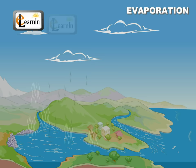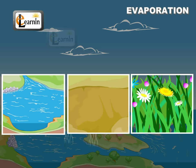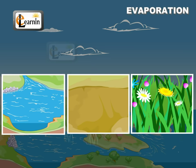Evaporation from the oceans accounts for 80% of the water delivered as precipitation, with the balance occurring on land, inland waters, and plant surfaces.